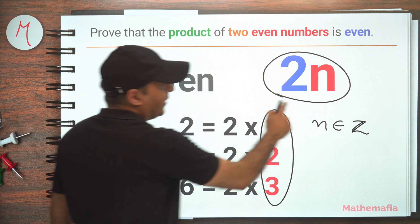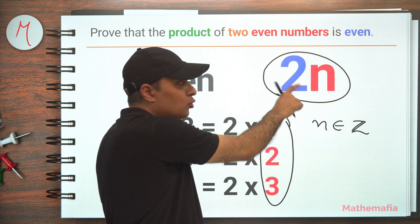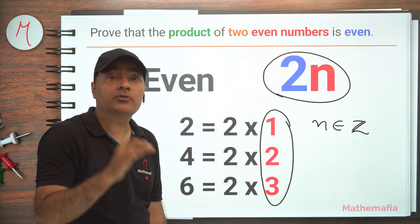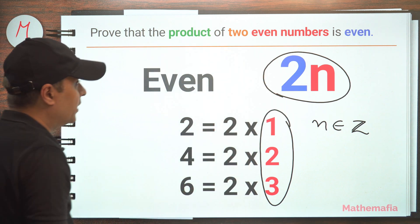What we have to prove is that if we multiply two such numbers, then the result is also of the same form. This is very easy to prove, so let's do it quickly.